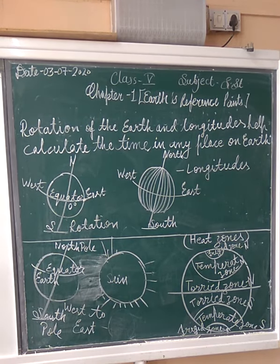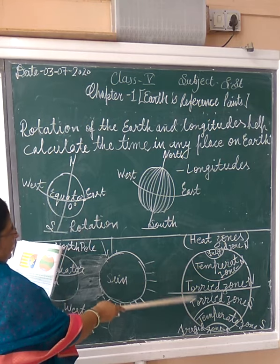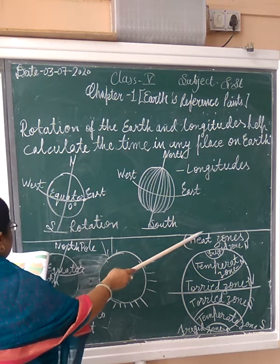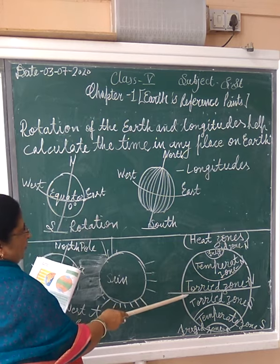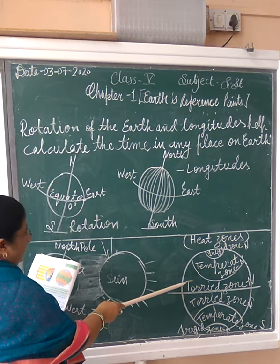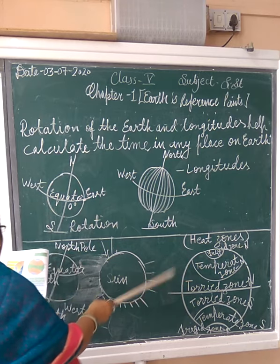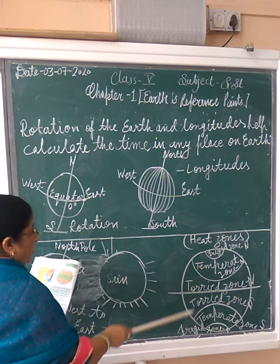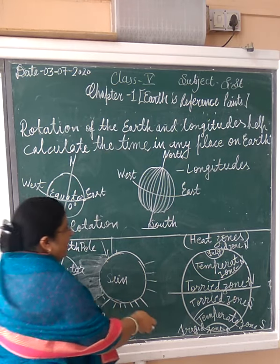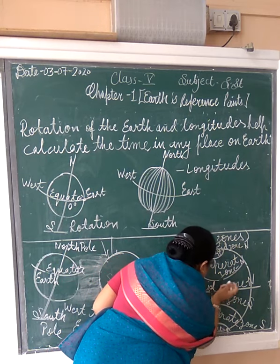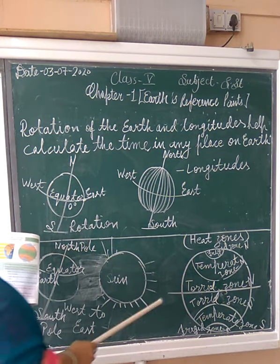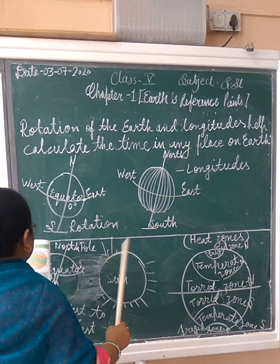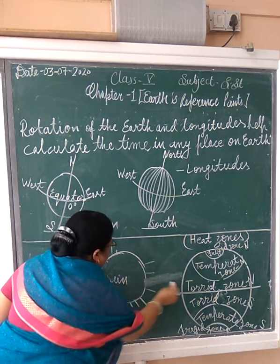To understand this distribution of heat better, the Earth is divided into three different heat zones. A zone is an area of land which has a particular characteristic. The Torrid Zone is the hottest zone because the sun rays fall directly. The Torrid Zone is the hottest zone, where the sun rays fall directly.